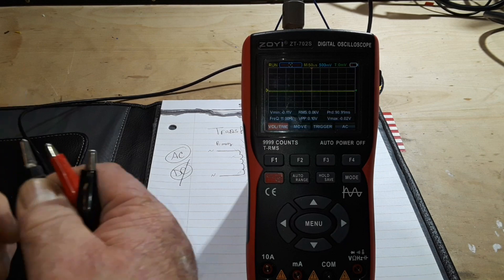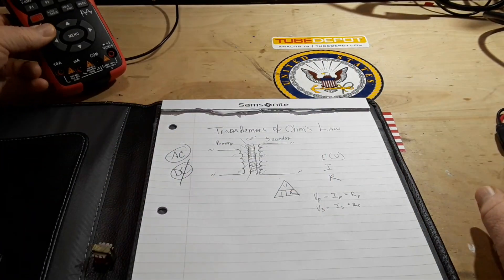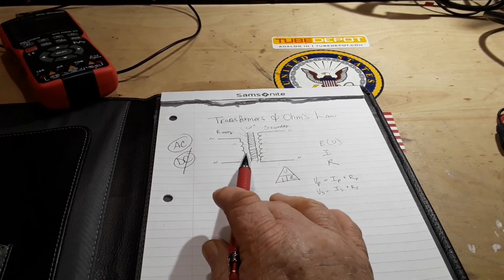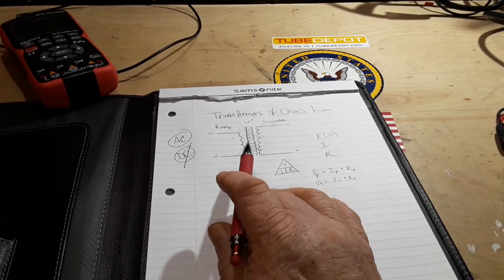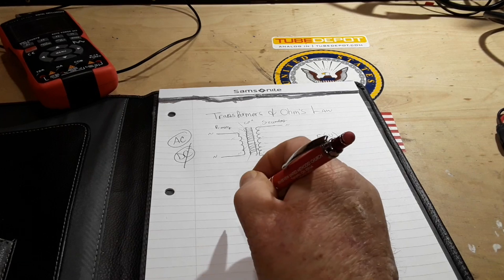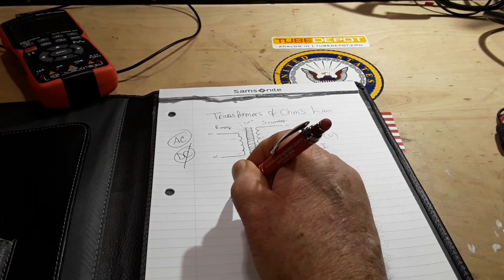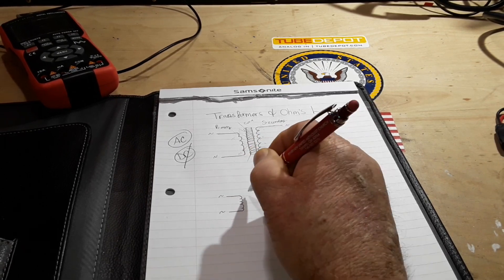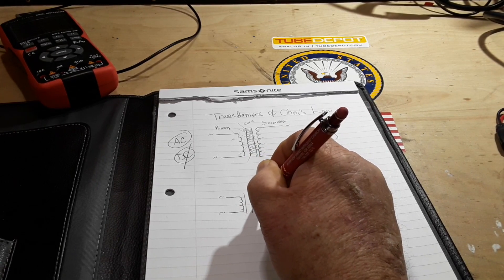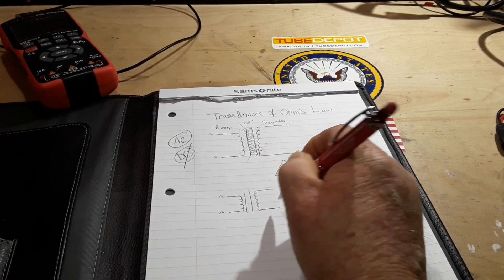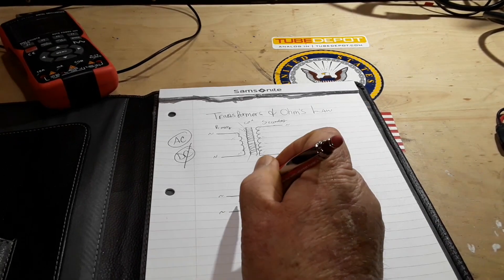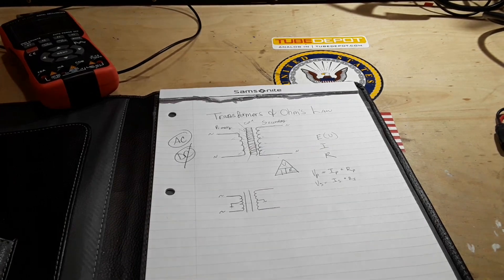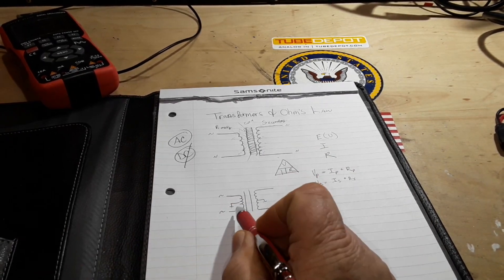But what I want you to remember and take away from this is what I said in the beginning: the transformer can keep the power relatively steady because what we're doing is we're trading. If we are feeding in, let's draw another transformer here. So there's our AC, our iron core, and there's our secondary side. Now our little audio matching transformers we're using have center taps. Those just generally get grounded.